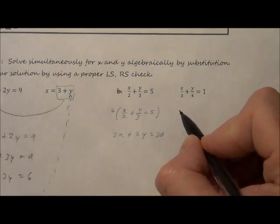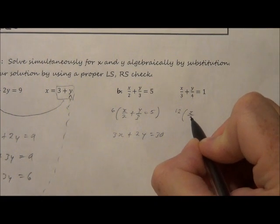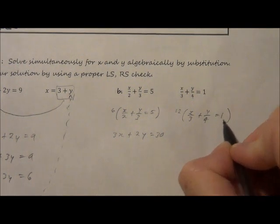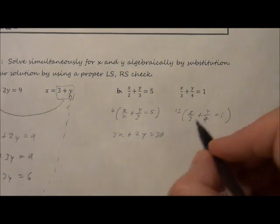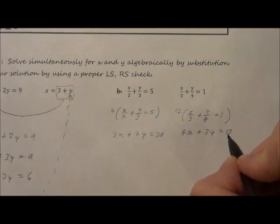So there's one equation without fractions now. Now I'm going to do the same thing over here. We've got 3 and 4 so the lowest common multiple would be 12. So I'm going to multiply both sides by 12. So 12 divided by 3 gives me 4, 12 divided by 4 gives me 3 and that gives me 12.